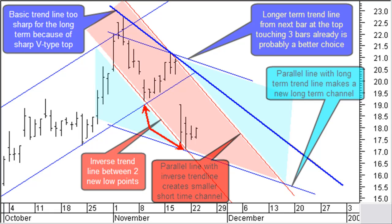Here it is touching three bar highs already, which is a good sign. Next, you can now draw a parallel line through the last pivot low point to create the longer-term blue down channel. Looking for a smaller channel within this bigger channel, we can draw an inverse trend line between the last two low points and a parallel line through the last high point. That way you have a smaller, faster-moving and shorter-term downtrend channel within the long-term channel.